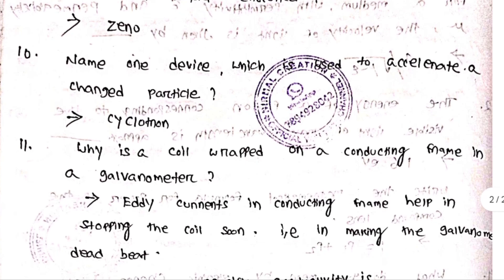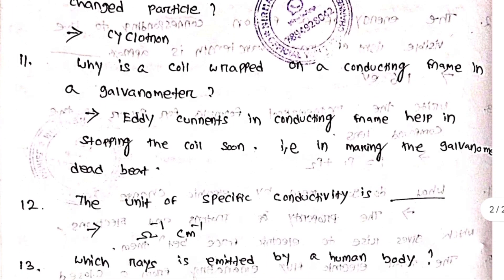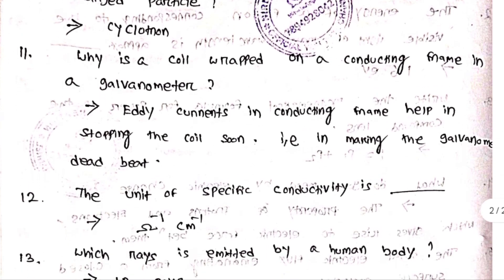Name one device used to accelerate charged particles. Why is the coil wound on a conducting frame in a galvanometer?